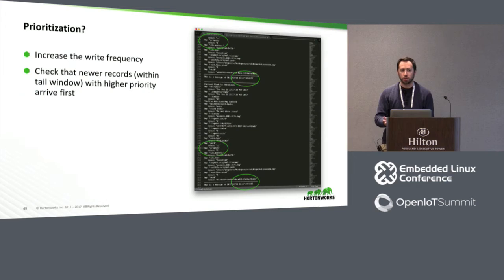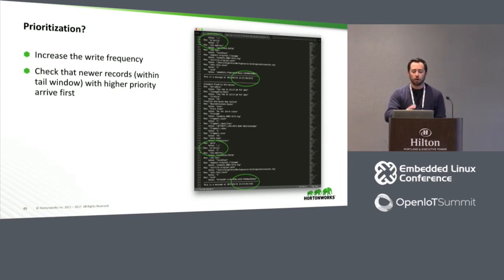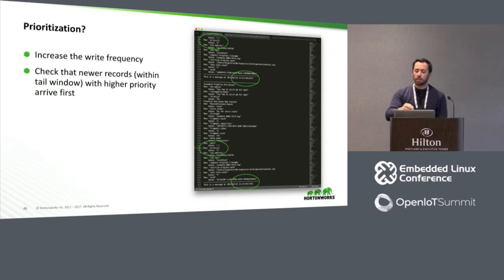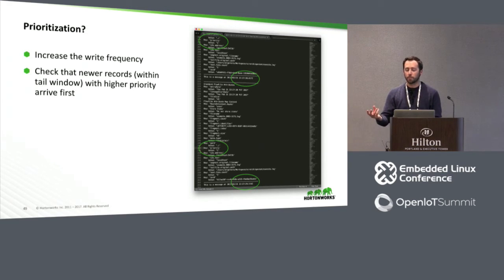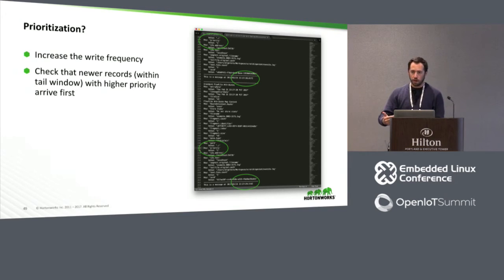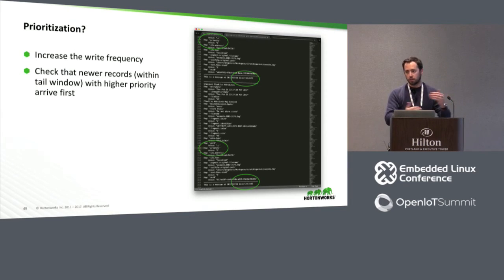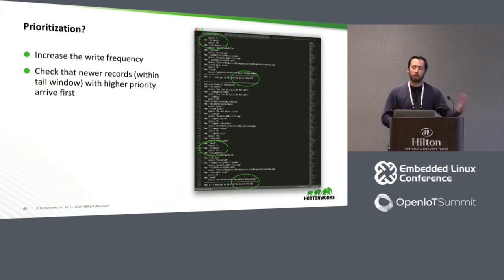Now let's verify the prioritization. Did it actually prioritize the data coming in? I increased the write frequency to verify this. At the very top you see priority value one with a message at 22:27:30.017. Then at the bottom you see priority two, but that message was generated at 22:27:29 seconds. So yes — even though that message was older and in a first-in first-out world would have appeared first, NiFi looked at the timestamps, tagged it correctly, and when it sent that data, it prioritized the higher priority message.